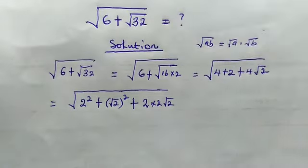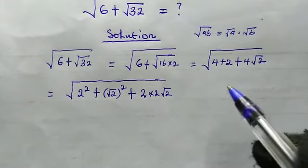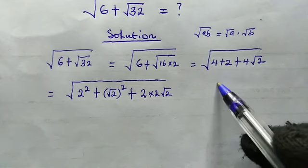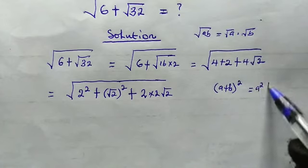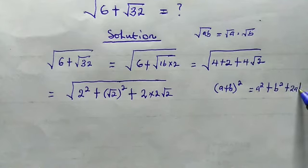Now let's recall the following algebraic property that has to do with a binomial expansion. So we have here a plus b squared, this is equal to a squared plus b squared plus 2 times a times b.